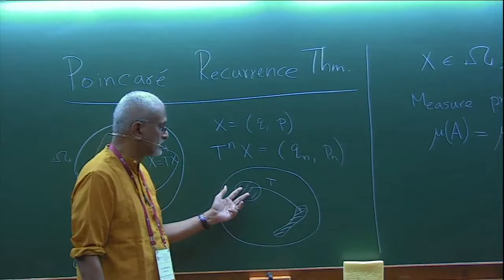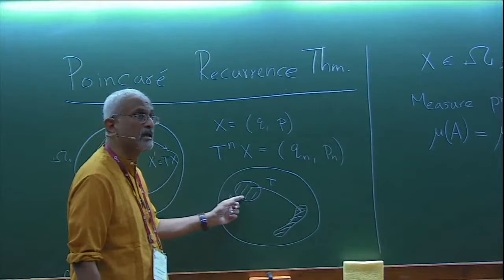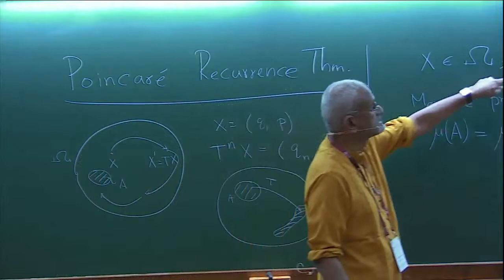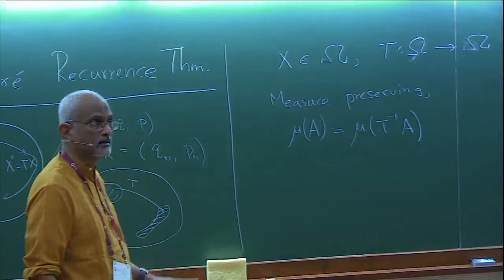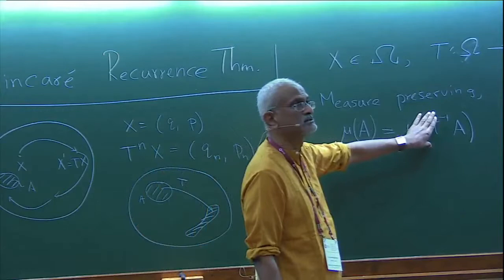More precisely, almost all points in A will come back and come back infinitely often. The only condition the transformation has to satisfy is that there is a measure that is preserved — nothing about integrability, nothing about whether it's integrable, non-integrable, or even Hamiltonian. As long as the measure-preserving condition holds, this statement is true.